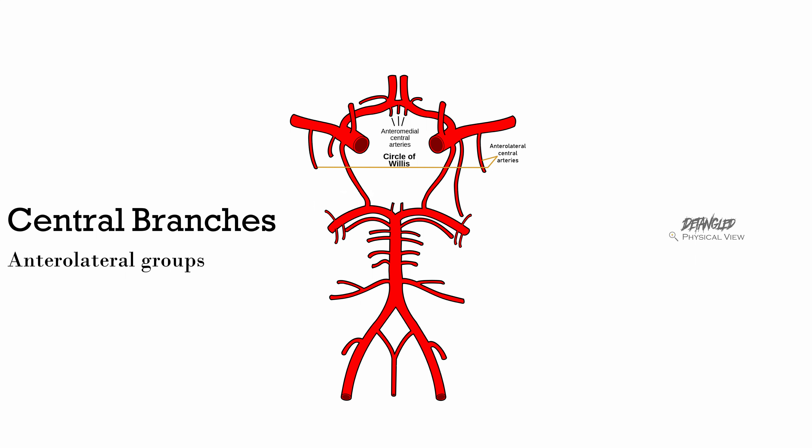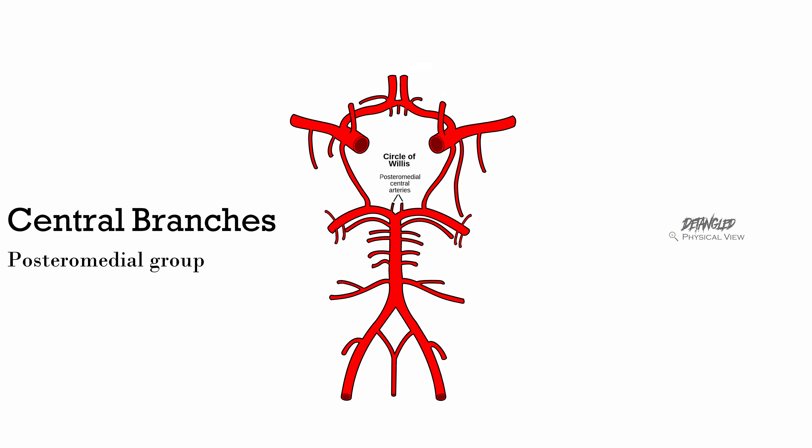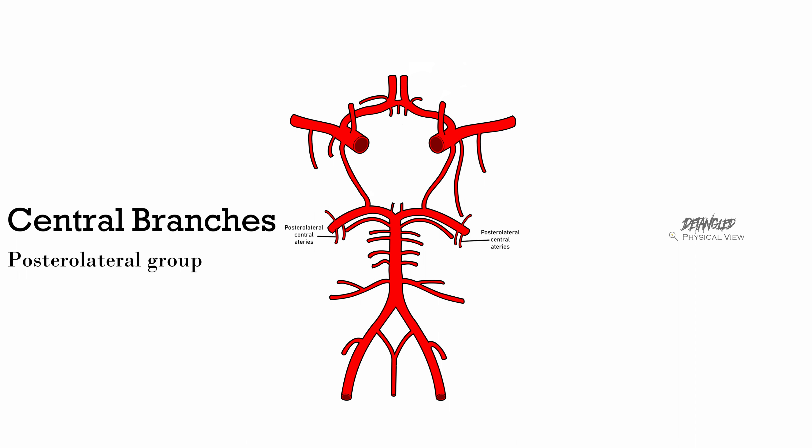The anterolateral groups arise from the middle cerebral arteries. The posteromedial group is formed from the posterior cerebral and posterior communicating arteries. The posterolateral groups — also two groups, the left and right sides — arise from the lateral parts of the posterior cerebral artery.